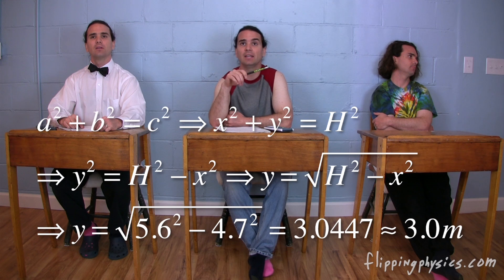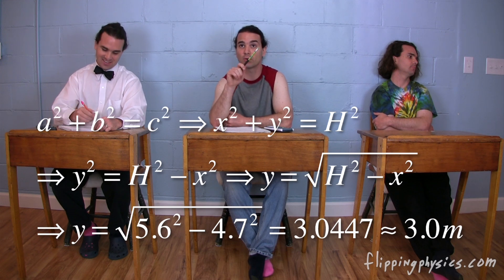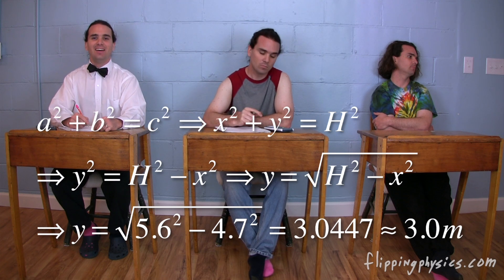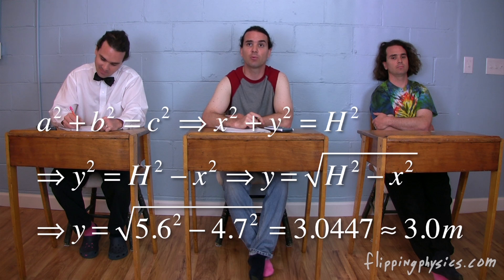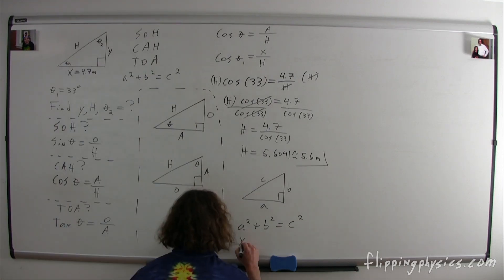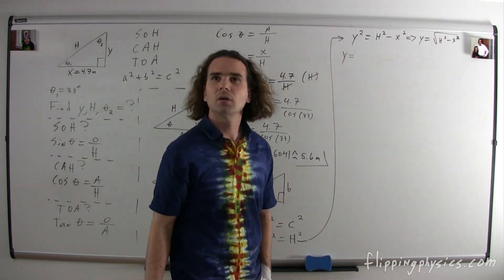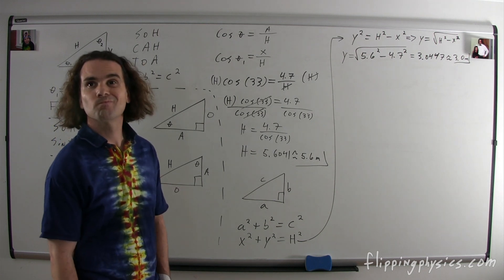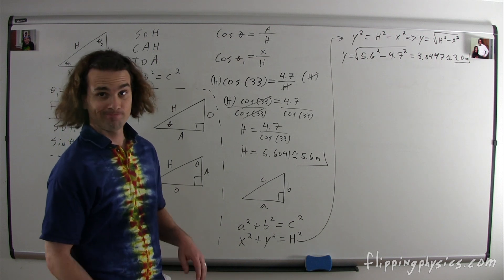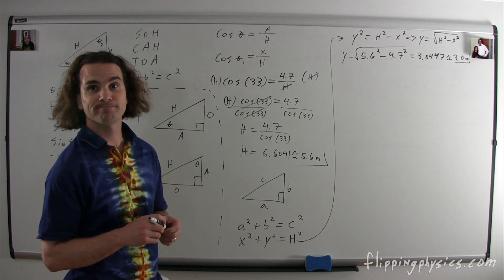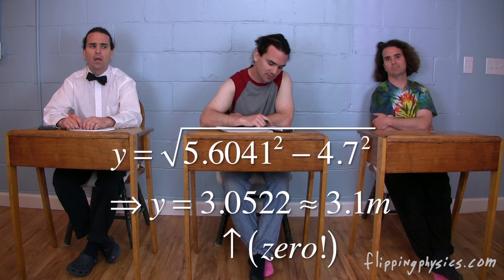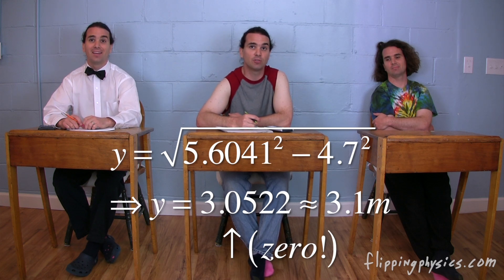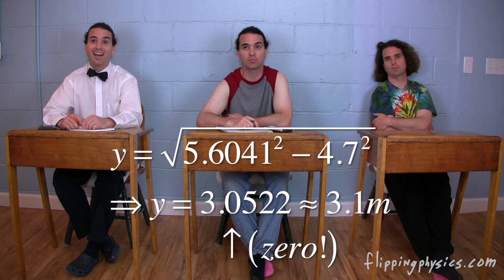Plugging in our numbers, we get y equals the square root of the quantity 5.6 squared minus 4.7 squared. That works out to be 3.0447, which rounds to 3.0 meters with two sig figs. We made a mistake. Dang it again. I used the rounded answer to solve the problem. We need to use the unrounded number. We need to use 5.6041 instead of 5.6. That works out to be 3.0522, which rounds to 3.1 meters with two sig figs and not 3.0.